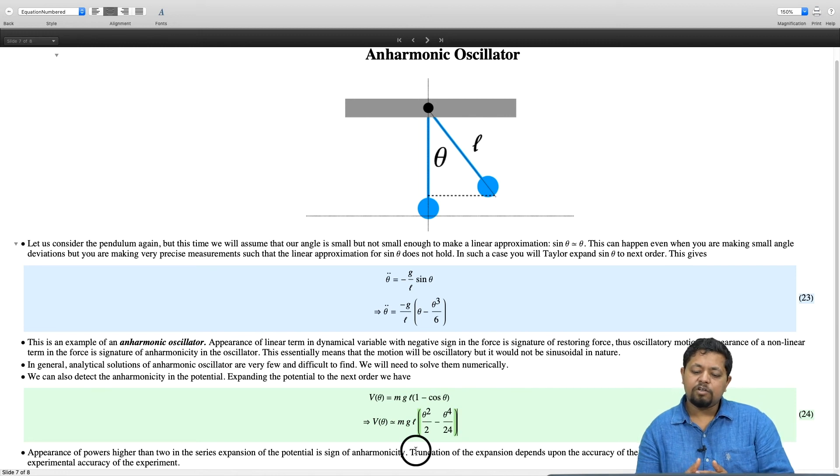If you are numerically solving it might be just good enough to take the entire potential or this entire force minus g by l sin theta into consideration for solving. So, really the approximation where you should truncate the series in theta depends on what is the accuracy of the calculation.